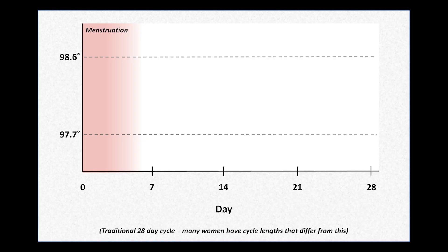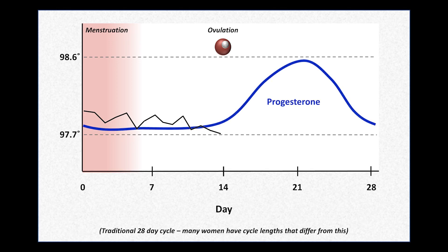Body temperature has also been found to be slightly higher in women on average, but as many women who have planned a pregnancy may know, this is partly related to the menstrual cycle. During the cycle, a woman's temperature reaches its lowest point just before ovulation. After ovulation occurs, the corpus luteum — what remains of the ovarian follicle after release of a mature ovum — secretes progesterone. The progesterone leads to an increase in temperature over several days by about 0.9 degrees Fahrenheit, which then lasts about two weeks until the corpus luteum regresses and progesterone levels drop, just before the onset of menstrual bleeding.